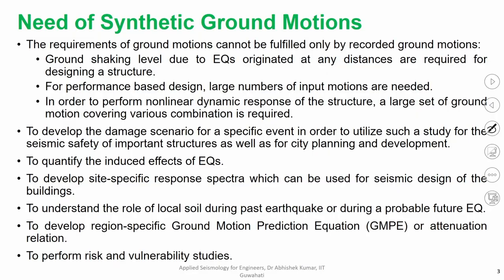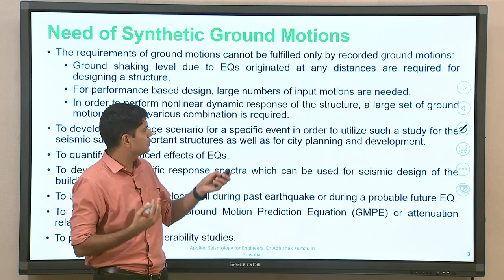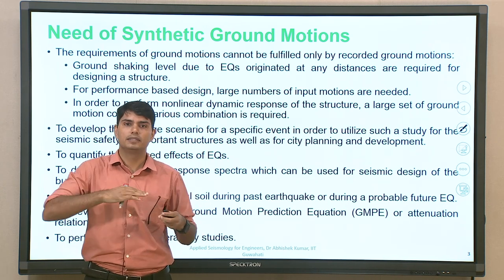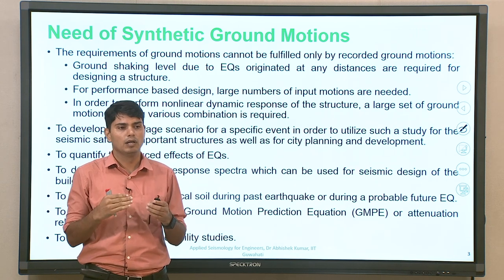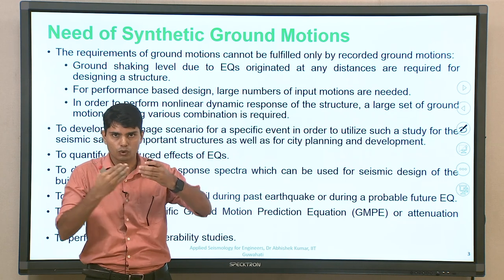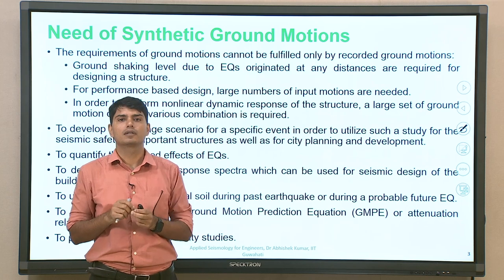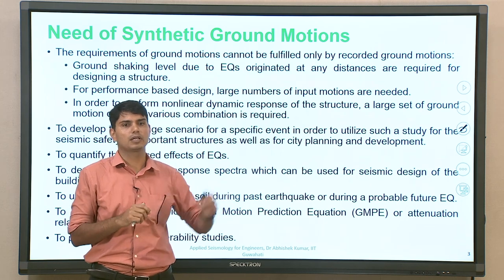The requirement of ground motion cannot be fulfilled only by recorded ground motion, primarily because ground shaking due to earthquakes originating at distance is required. For performance-based design also, you have to have a larger set of ground motion with significant variation which are possible at your site of interest, taking those potential variations into account while developing a larger dataset for performance-based analysis.